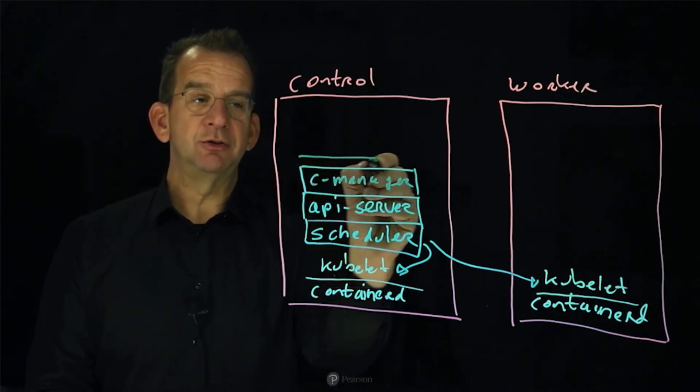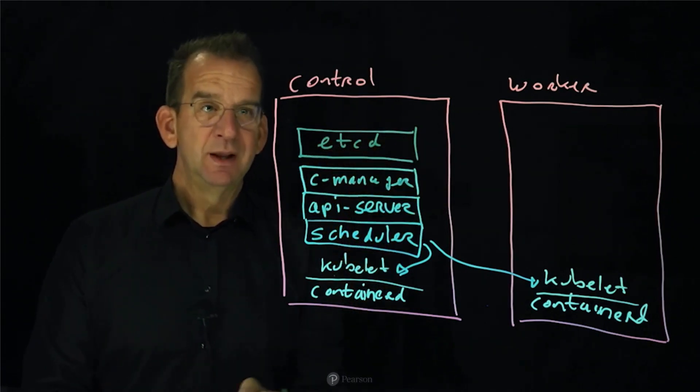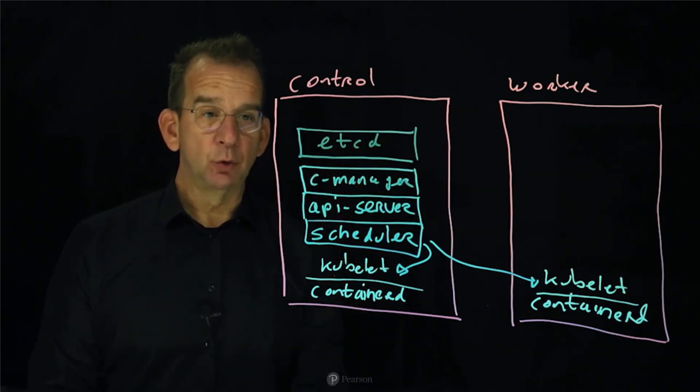And of course, there is the Kubernetes database itself, which is the etcd. And all of that is running on the controller node. Now you are going to interface with Kubernetes.